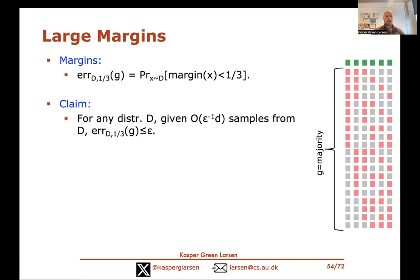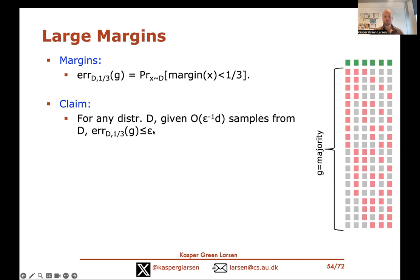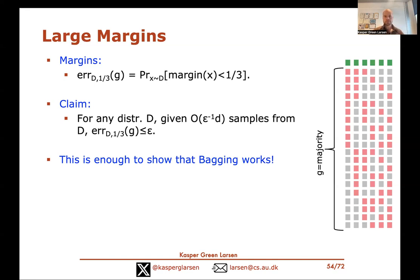We define g as the majority vote of all possible subsamples, and the margin error at margin 1/3 as the probability over a new data point of having margin less than 1/3. The claim is that with just d/ε samples, this giant majority vote has a margin error of at most ε. If we can establish this, that's enough to show that bagging works.